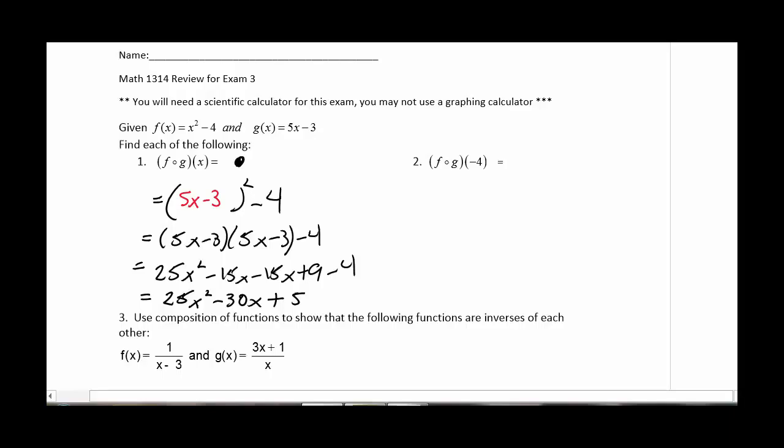Number two, we're asked to find f of g of negative 4. You know, while I went to all that trouble in number one to find f of g of x, I might as well use it. So 25 times something squared minus 30 times something plus 5. And what are we going to put in that blank? I'm going to put in negative 4. And I understand if you think you need a calculator on that. I think the first thing is 25 times 16. So you should end up with 400. A negative and a negative give me plus 120 plus 5. So when I add those three numbers together, I should get 525.